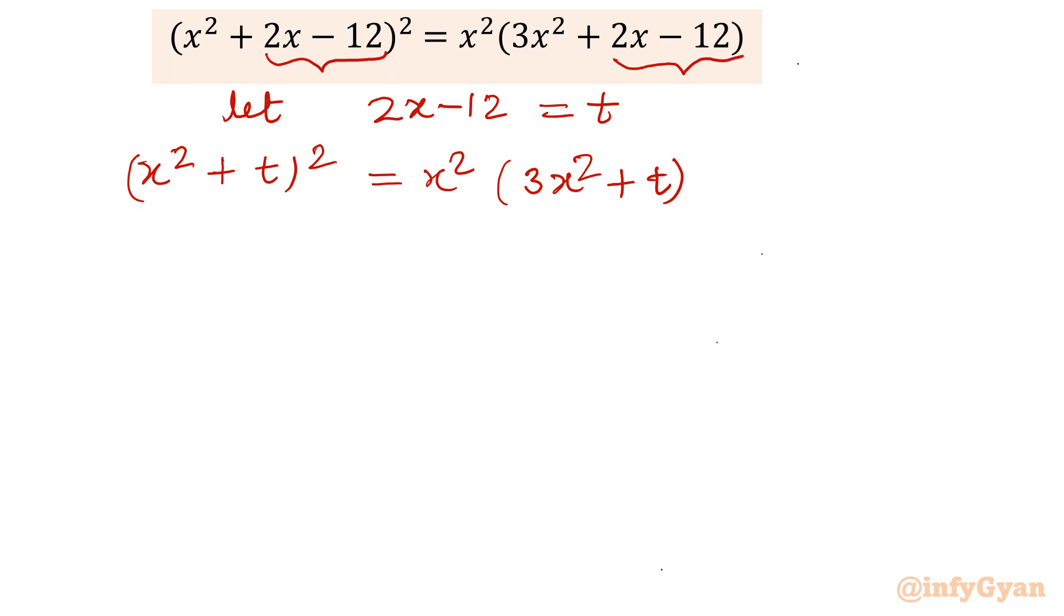Now I will use algebraic identity a plus b whole square. So a square plus b square plus twice ab. So 2x square t equal to, expanding RHS, 3x square times x square, so 3x power 4, x square times t, x square t. Now if I collect all the terms to left, then what will happen?